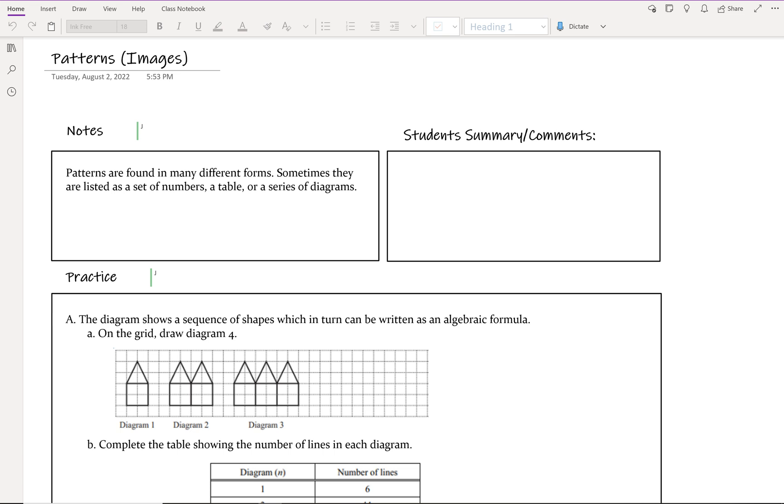The key things you want to look for is how did one picture change from the next. Then you want to try some things and see if replicating what you did, starting from the first one to the second one to the third one, will match what the pattern already says.